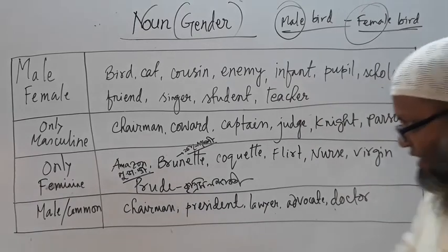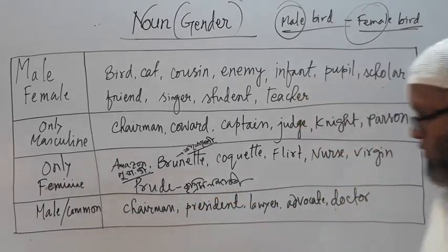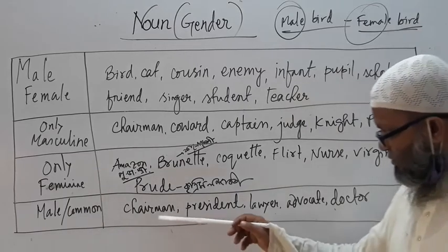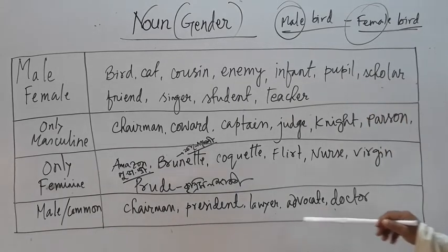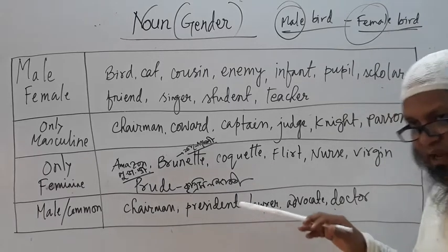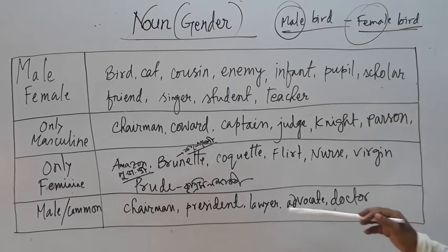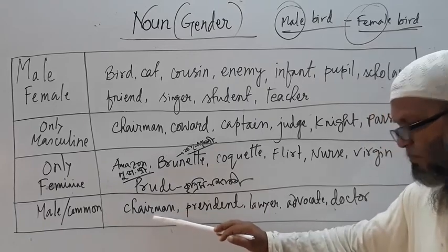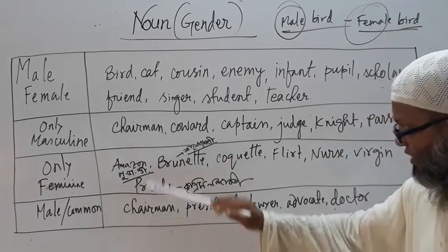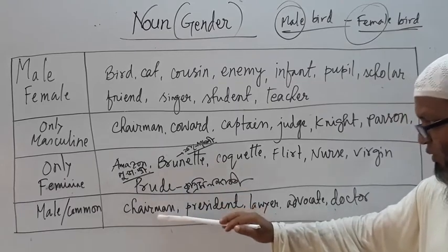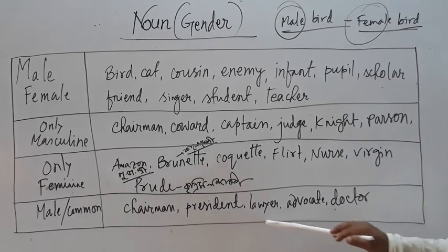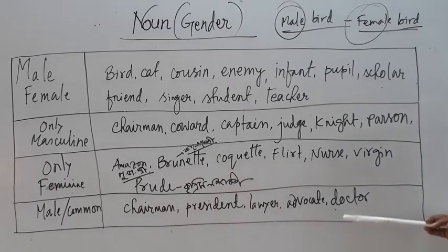And then, next, there are words where both male and female can be used. For example: chairman, president, lawyer, advocate, doctor. You can use them as male, or you can use them as female. Chairman means maybe male or female. President, lawyer, advocate, and doctor also can be both.